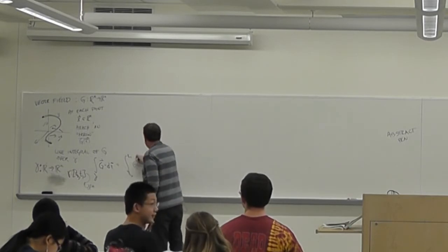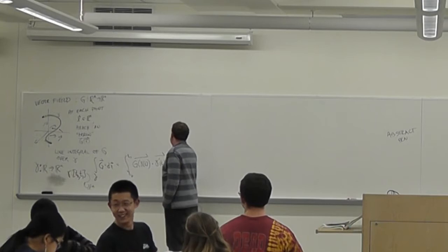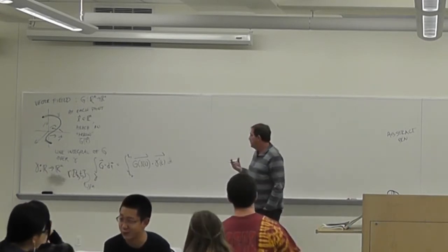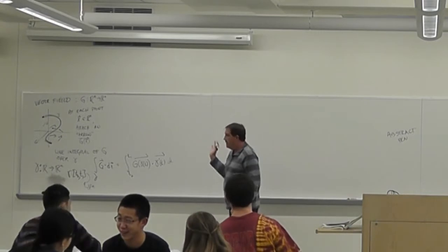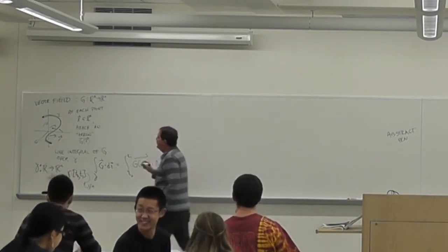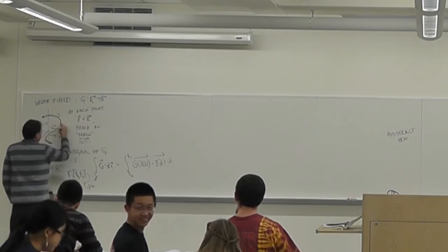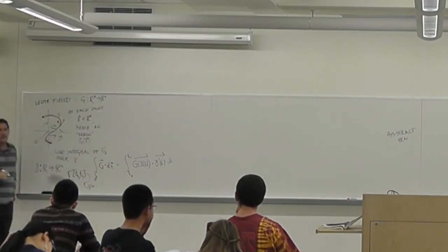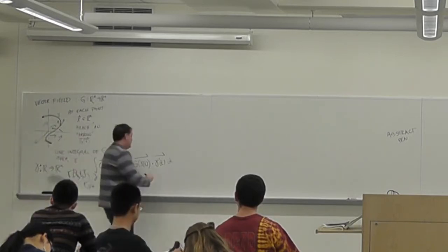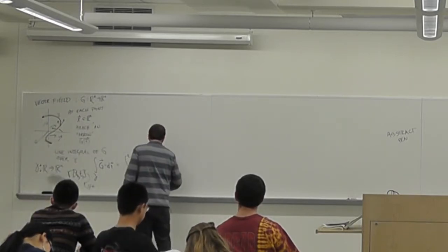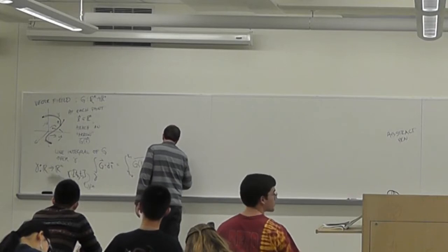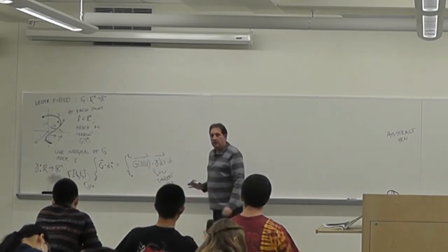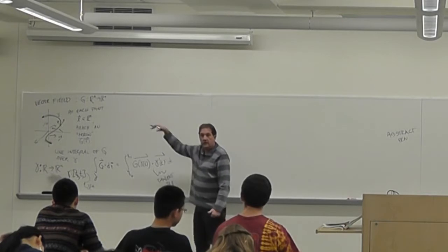So g of gamma — which is a vector — and we dot it with the derivative of gamma, which is also an n-vector. So both of these are vectors. And then we have dt. So this is the line integral, which gives us a measurement of how this vector field influences this curve as you traverse the curve.